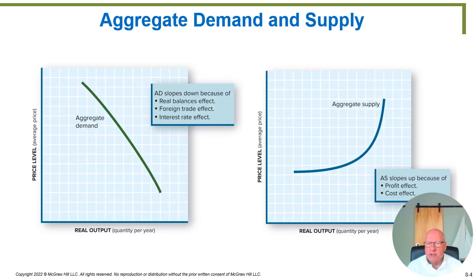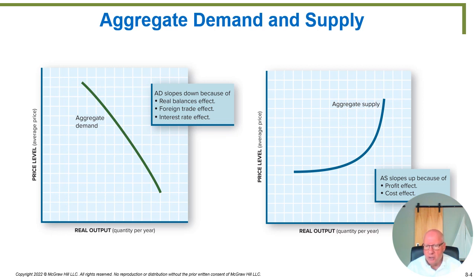Now let's take a look at some actual graphs and see how we put them together. In the left-hand graph we have aggregate demand, and you can see it slopes downward — it looks just like any normal demand curve. But with aggregate demand, we're talking about the desire to purchase goods and services that all businesses are producing. In the right-hand graph, we're looking at aggregate supply: the desire of all businesses to produce based on what the price level is doing.